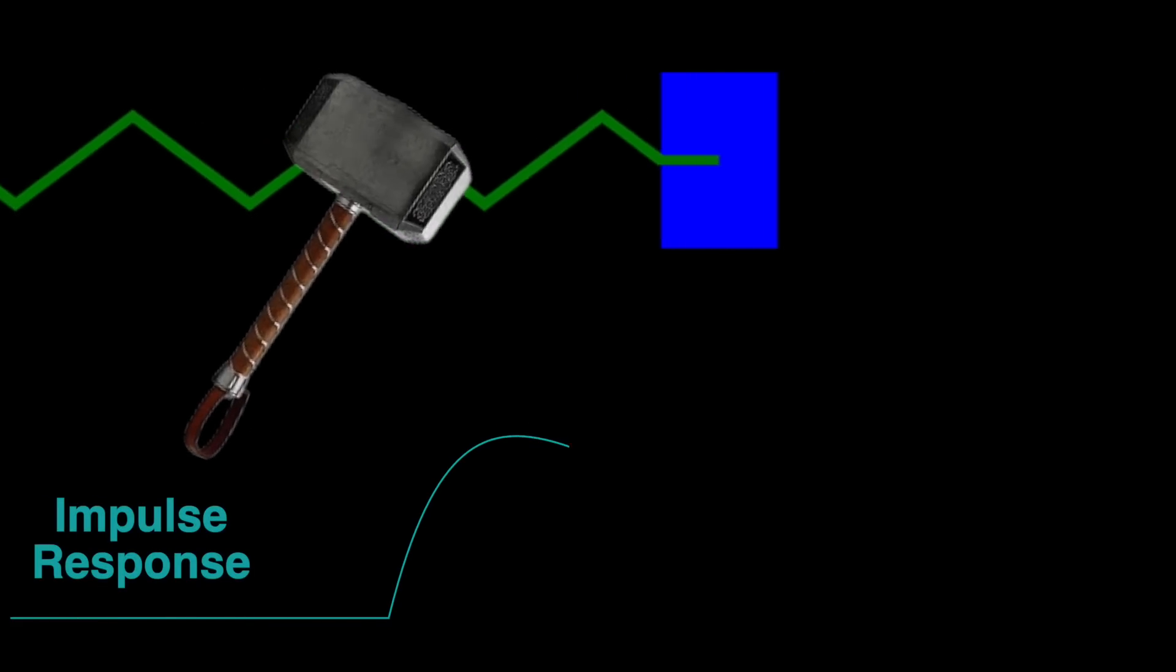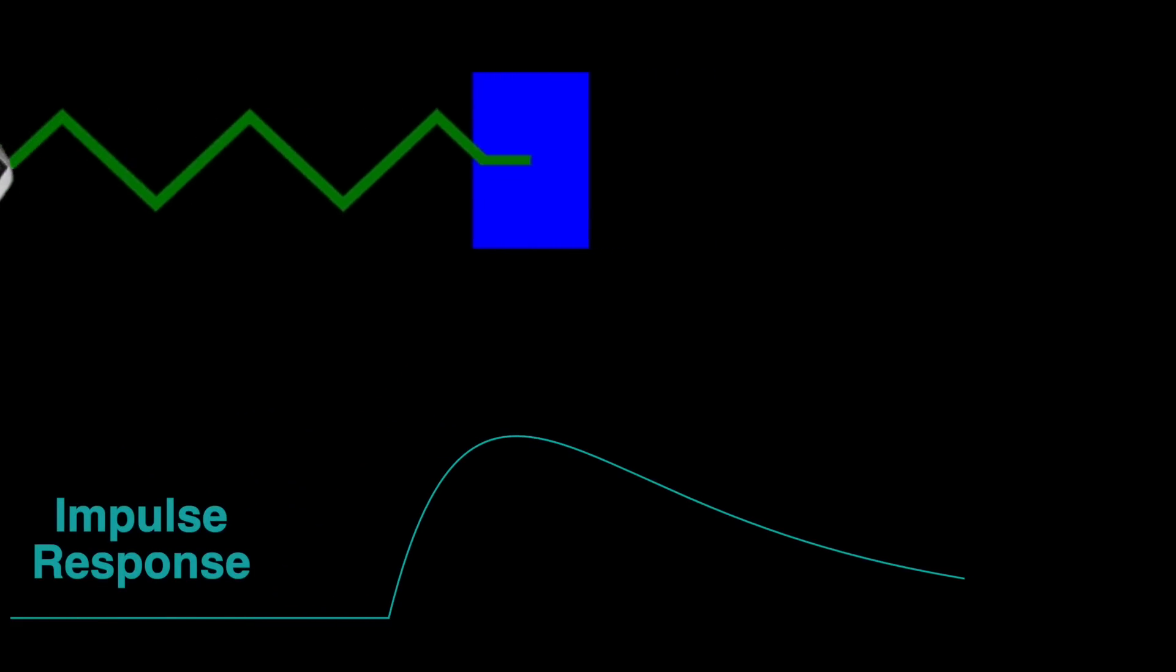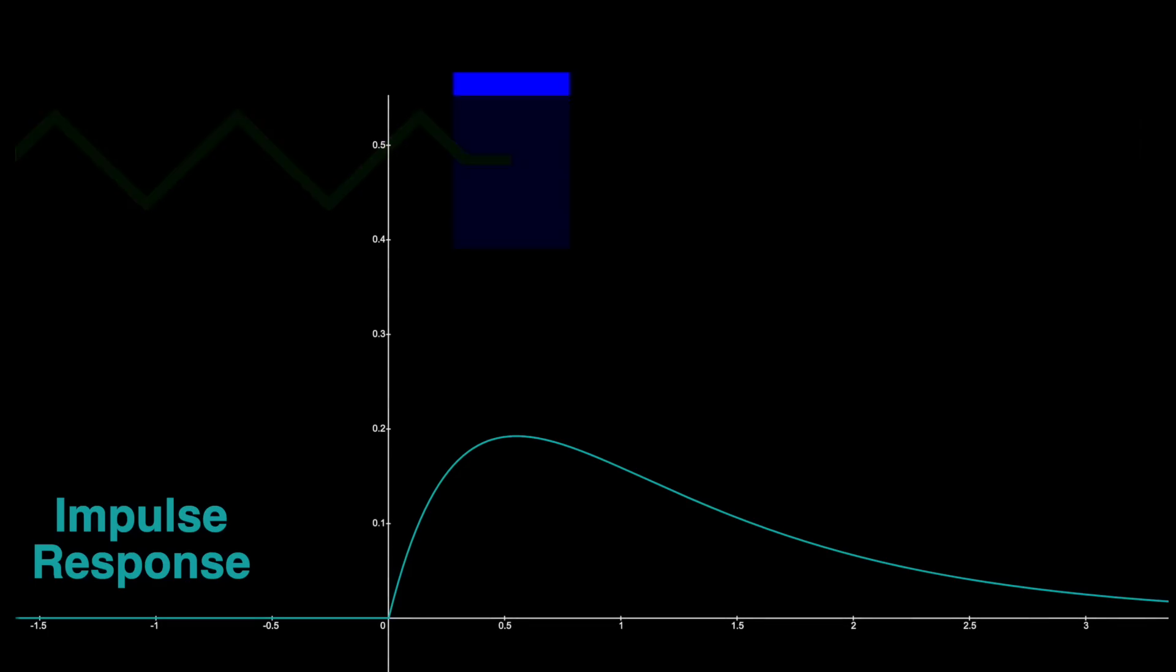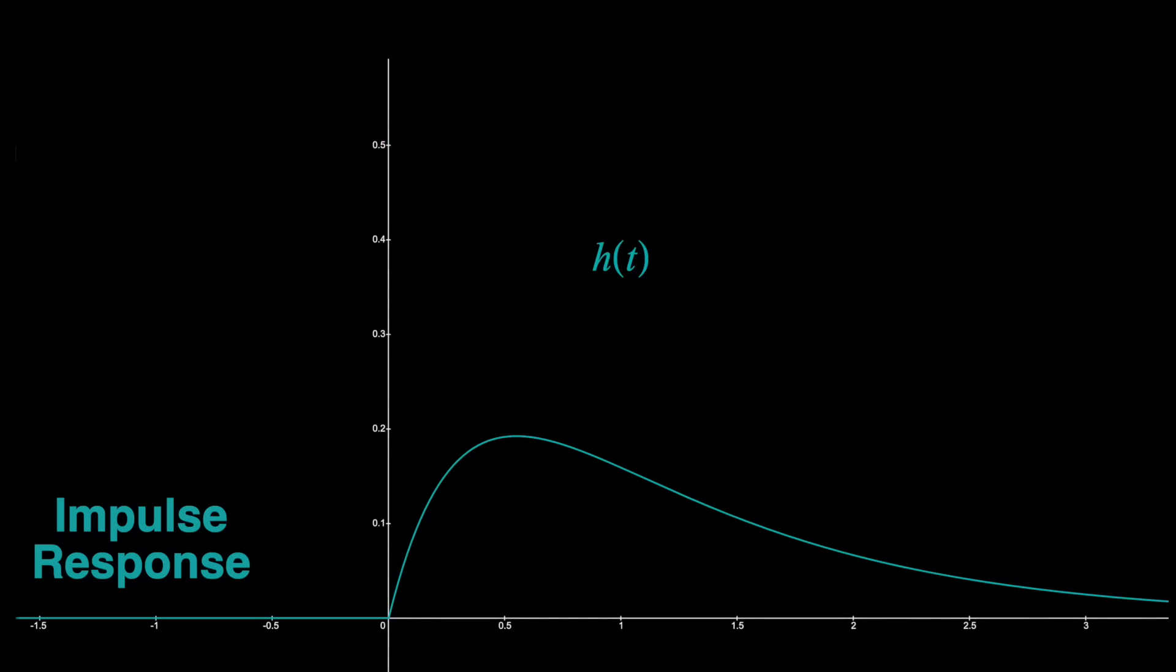The velocity would jump to one meter per second, and then after that the resulting equation of motion, the impulse response h of t, will look like this.